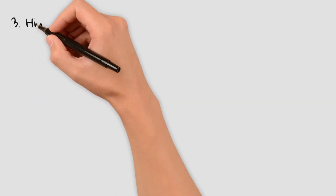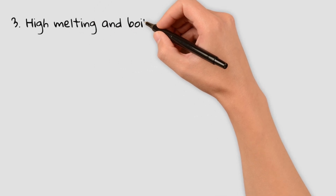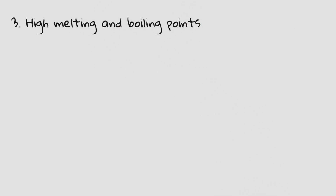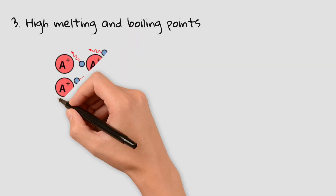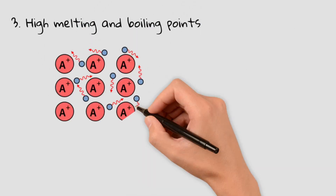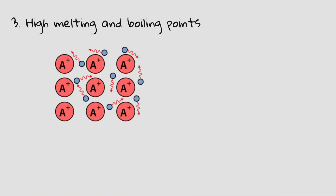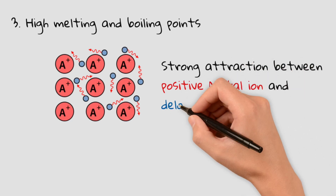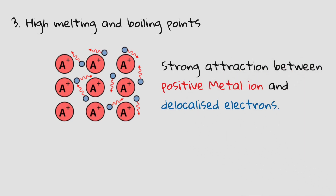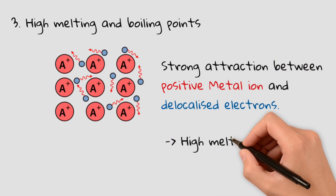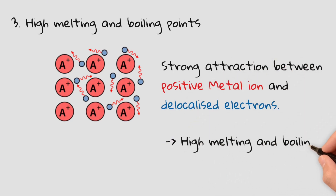Third, high melting and boiling points: the strong attraction between metal ions and the delocalized electrons requires a lot of energy to break, making metals solid at room temperature with high melting points.